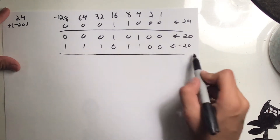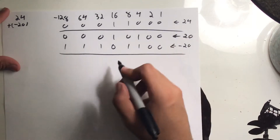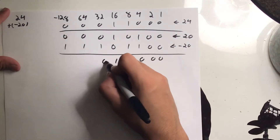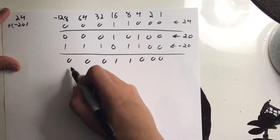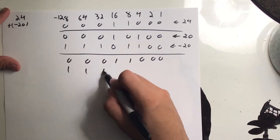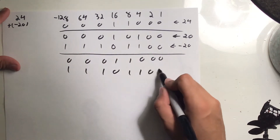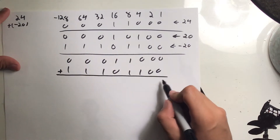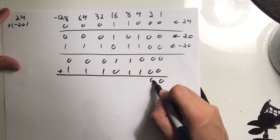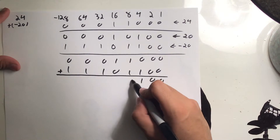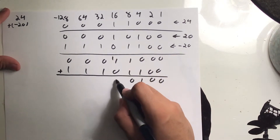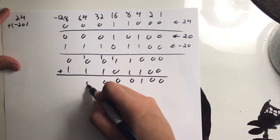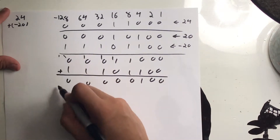Now add the two binary numbers together: 24 (00011000) plus negative 20 (11101100). Adding them in binary: 0, then 1 becomes 1; carrying through each column — carry the 1, carry the 1, and so on — we get: 0, 0, 0, 1, 0, 1, 0, 0, and a carry-out 1 at the ninth bit.